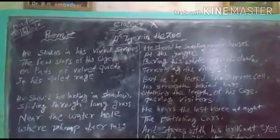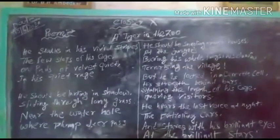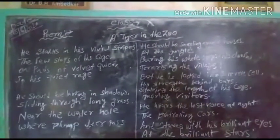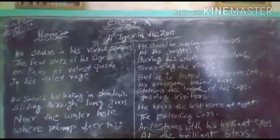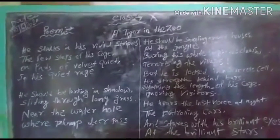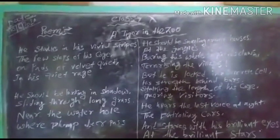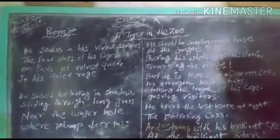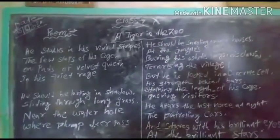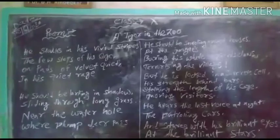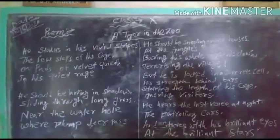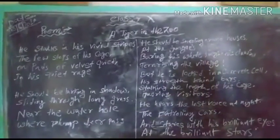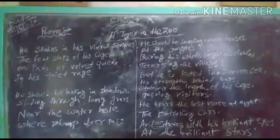In the first stanza we can see here: 'He stalks in his vivid stripes, the few steps of his cage, on pads of velvet quiet, in his quiet rage.'